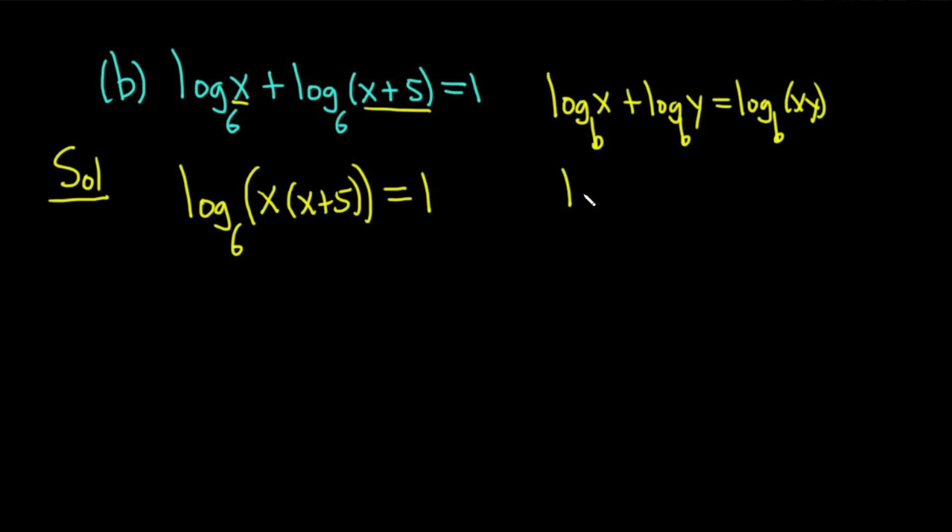So first step is combine the logs. If you had a minus sign, by the way, instead of a plus sign, it's very similar. So log base b of x minus log base b of y, in this case you divide. It's log base b of x over y. Because that does happen in some examples, you'll get a minus sign. So product rule, quotient rule, that's what they're called, and super useful.